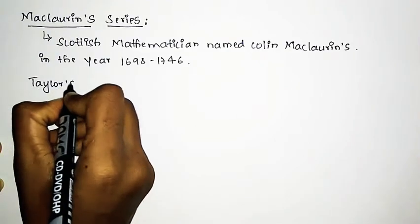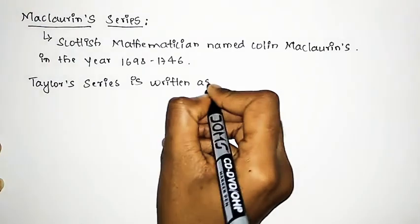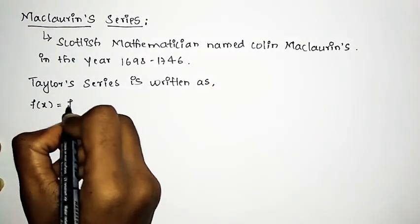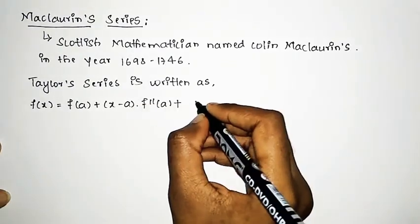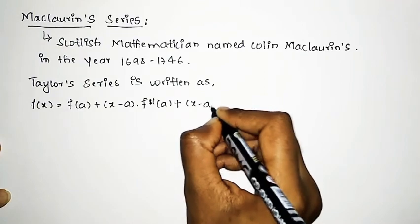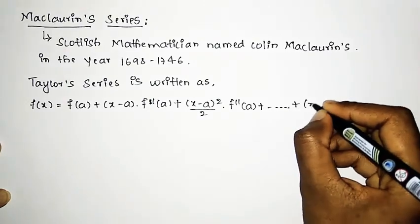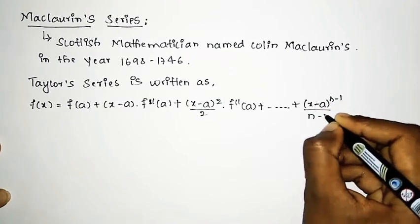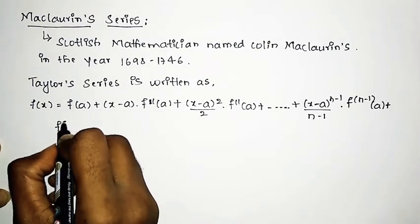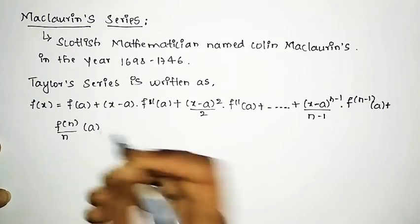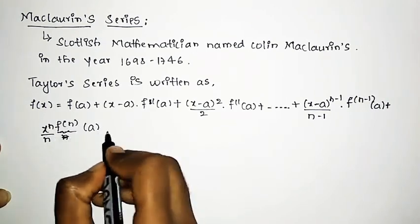The Taylor series is written as: f of x is equal to f of a, plus x minus a into f dash of a, plus x minus a the whole square divided by 2 into f double dash of a, and similarly up to the nth term — x minus a raised to n minus 1, divided by n minus 1, into f raised to n minus 1 of a, plus the nth term. This is the Taylor series.